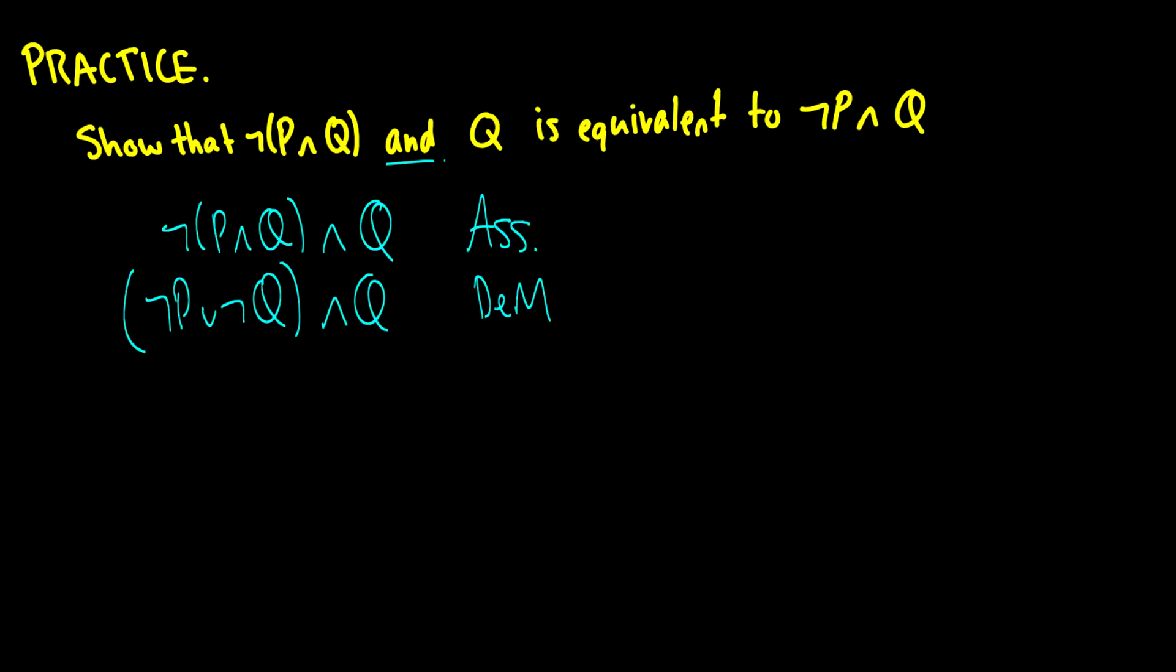Now there are a couple things that we could do here. We can either use the distributive property or we can use not the associative property. So we have to distribute because these are different operators here. So in this case we're going to get not P and Q or not Q and Q and this is distributivity.